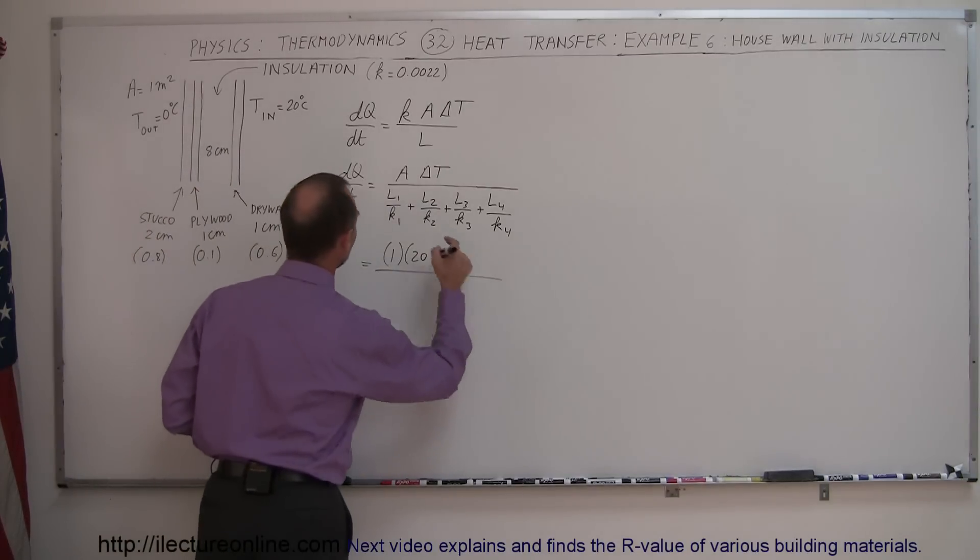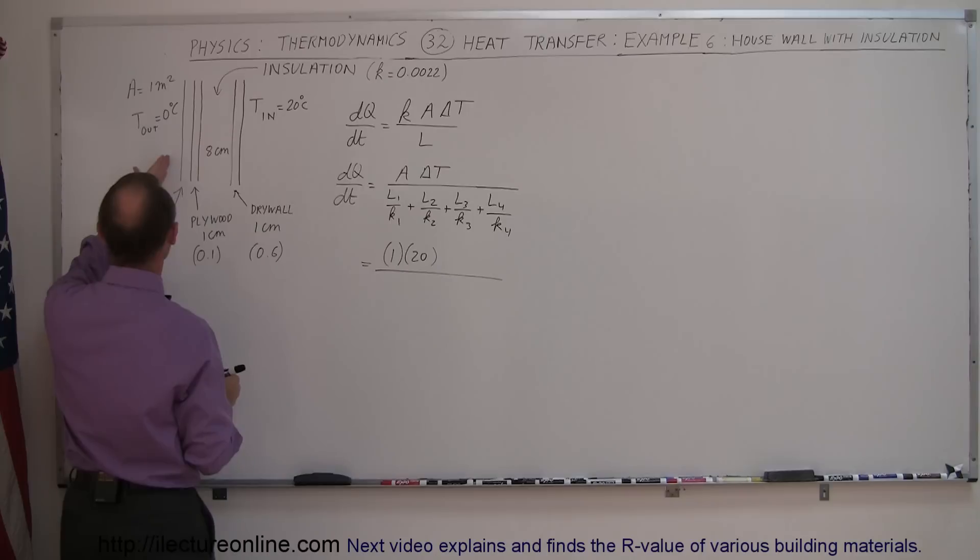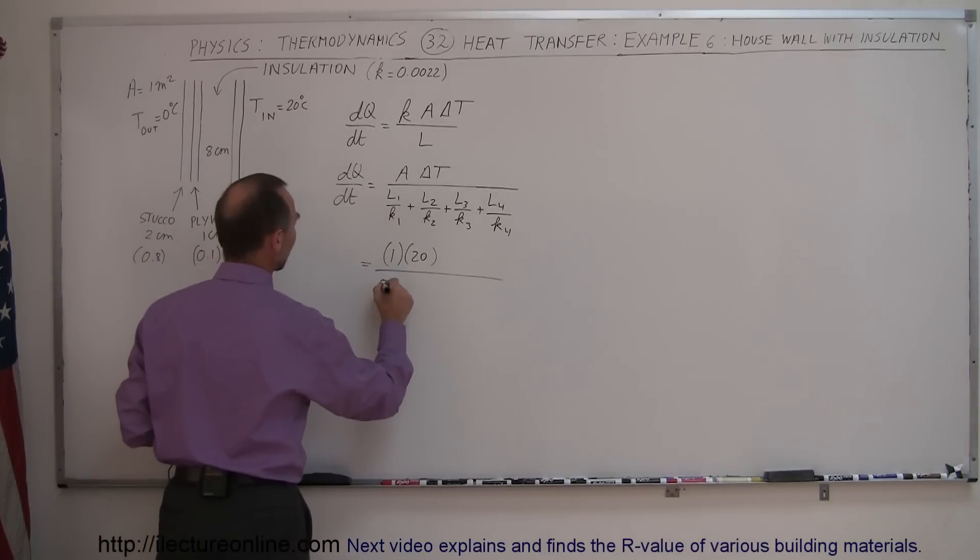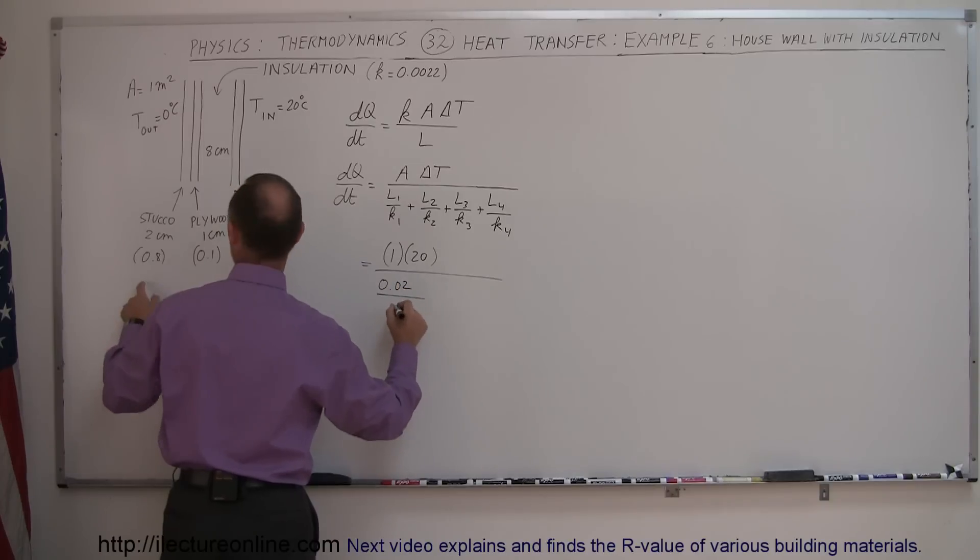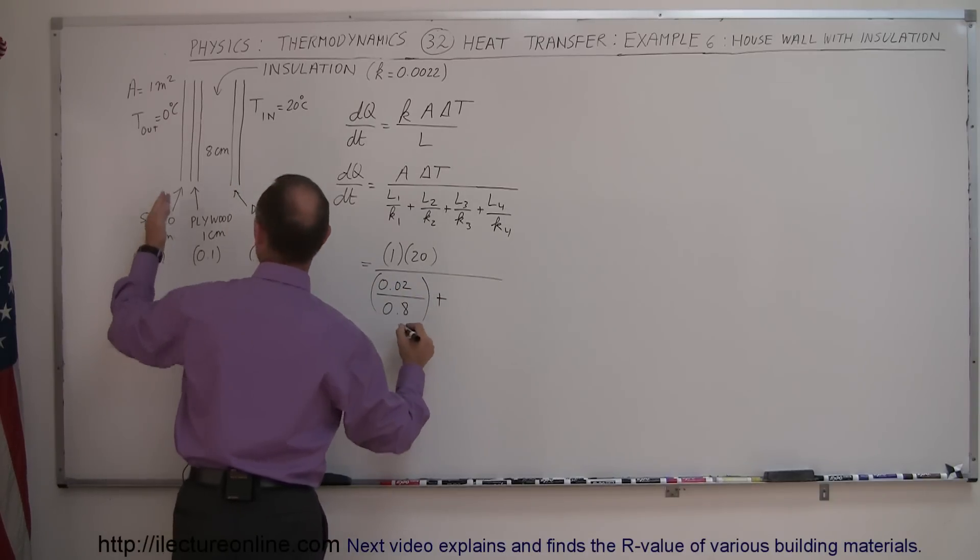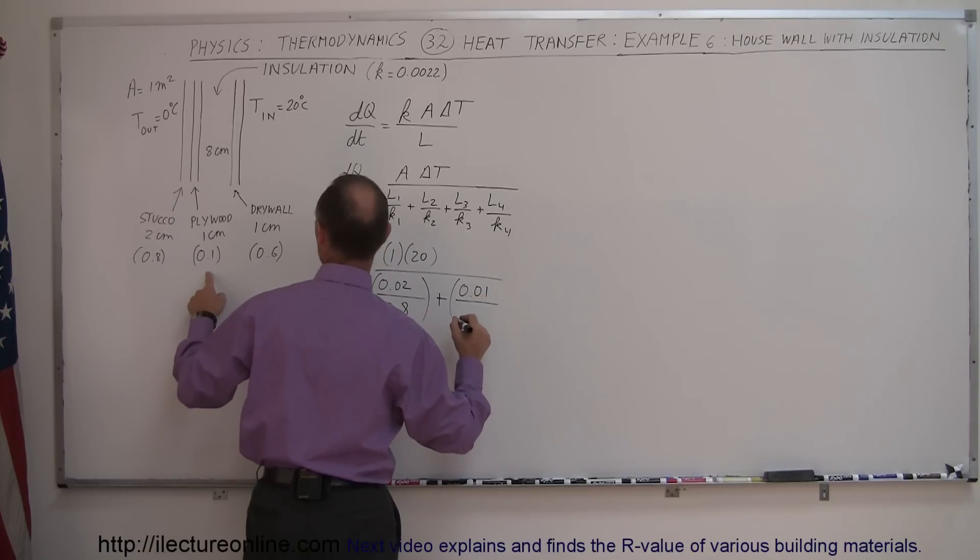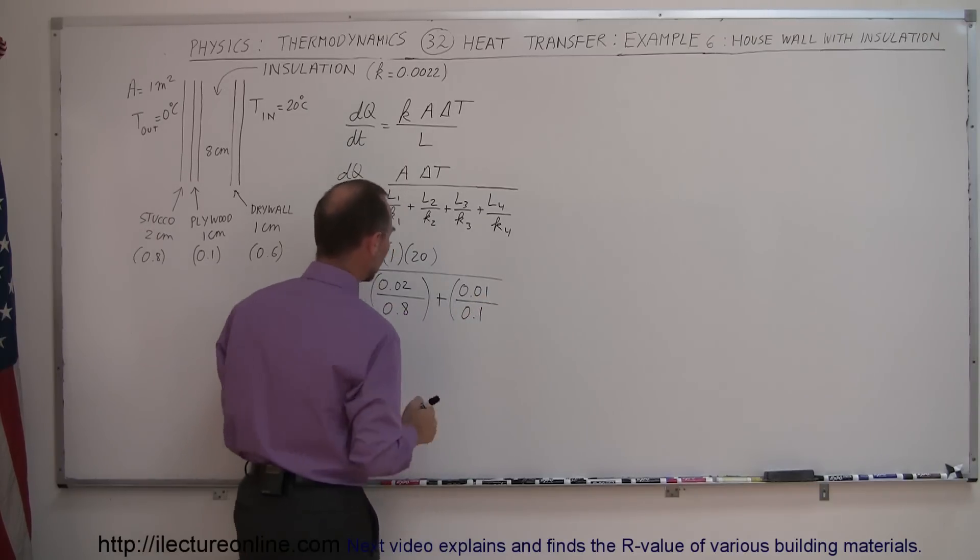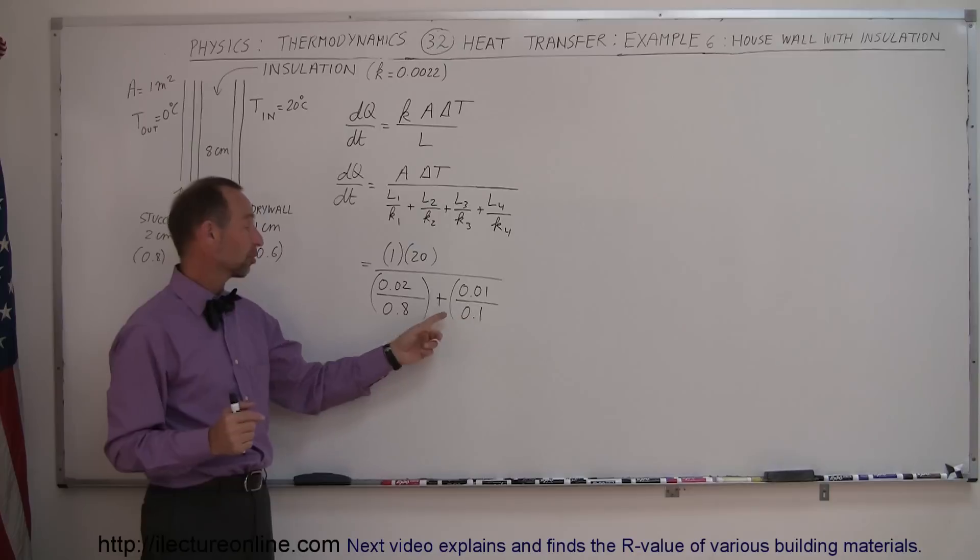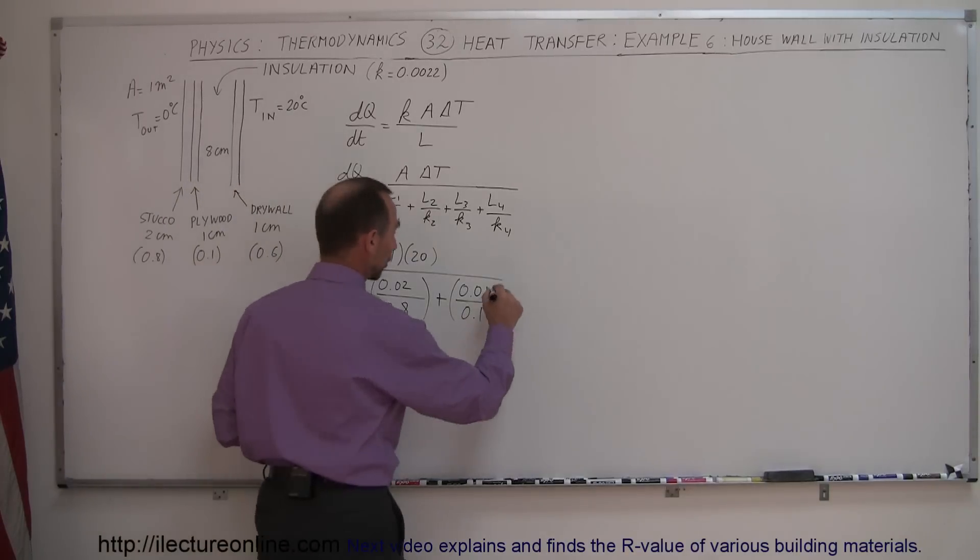And so we divide that by L1 over K1 for the outside stucco. So that would be 0.02 divided by 0.8 for the K value for stucco. Plus then we had the plywood section, 1 centimeter, 0.01 meter divided by the K value of 0.1. Notice how the K value for wood is much smaller than it is for stucco or concrete.